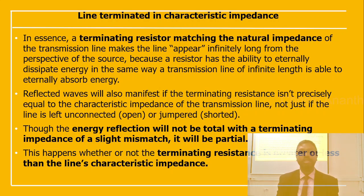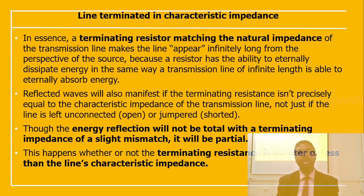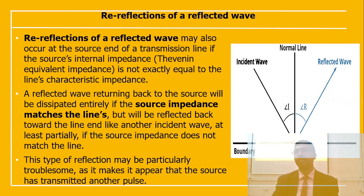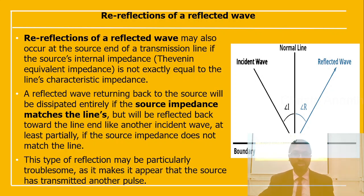Reflected waves will also occur if the terminating resistance is not precisely equal to the characteristic impedance — not just when the line is left open or shorted. Though energy reflection will not be total with a mismatched terminating impedance, it will be partial. This happens whether the terminating resistance is greater or less than the characteristic impedance. Re-reflection of the reflected wave can occur at the source end of the transmission line.